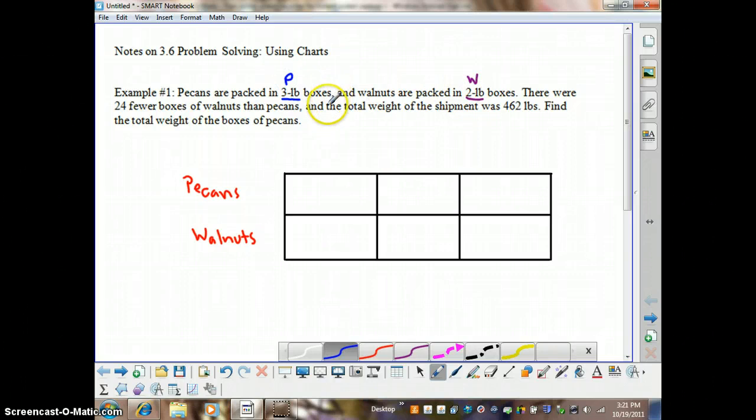And then we have a statement that compares the number of walnuts and pecans. There are 20 fewer boxes of walnuts than pecans. And then the last thing we have here is a total that we'll have to worry about. So let's start by thinking about what we're going to do to get a total.